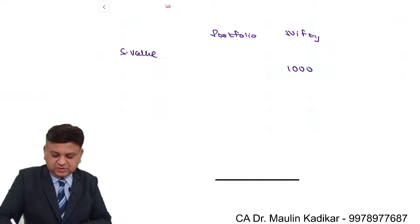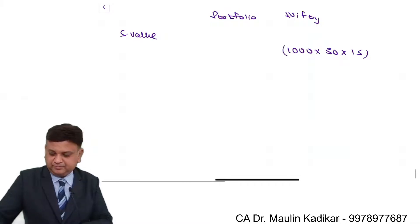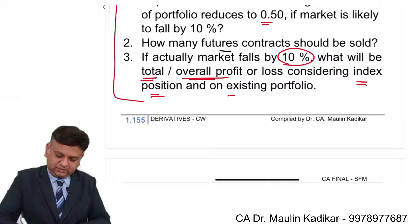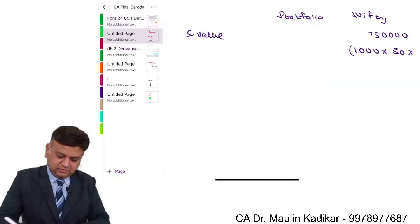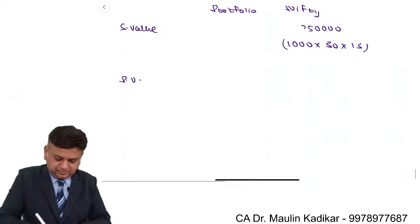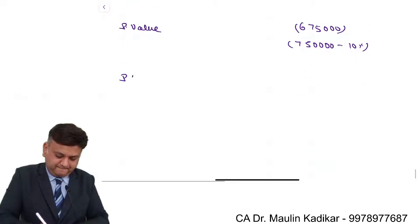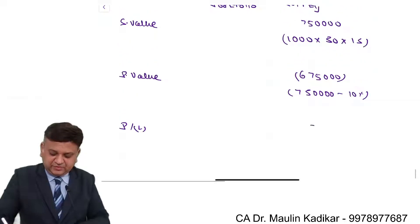So sale value is 1000 into 50, that is 50,000 into 15, so 7,50,000. Market is falling down by 10%. So purchase value is 7,50,000 minus 10%, which is 6,75,000. So there is a profit of 75,000.